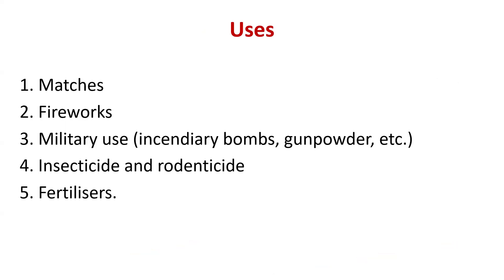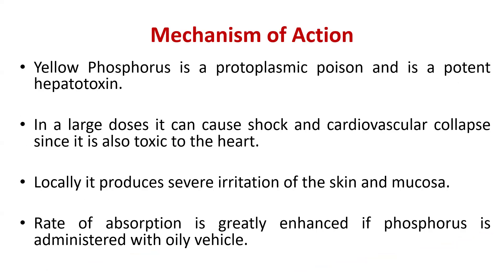Let us see the uses of phosphorus. It is mainly used for matches, fireworks, military use such as bombs or gunpowders, insecticide and rodenticide, and it is also used in fertilizers. By these uses, we can understand the common contexts of phosphorus exposure and its mechanism of action.